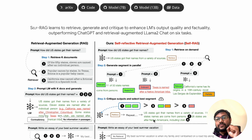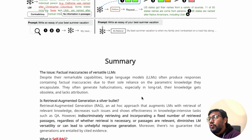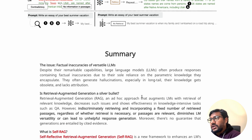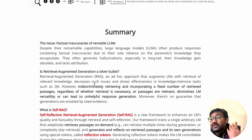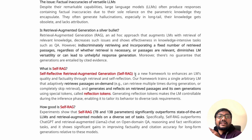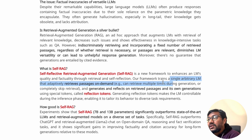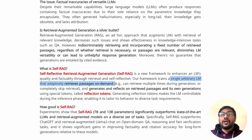Where this paper really shines is the level of detail in describing the approach. Self-RAG is a new framework designed to improve the quality and factuality of responses through two things: retrieval and self-reflection. The framework trains a single large language model that adaptively retrieves passages on demand — meaning it retrieves only when it needs to, and completely skips retrieval otherwise.